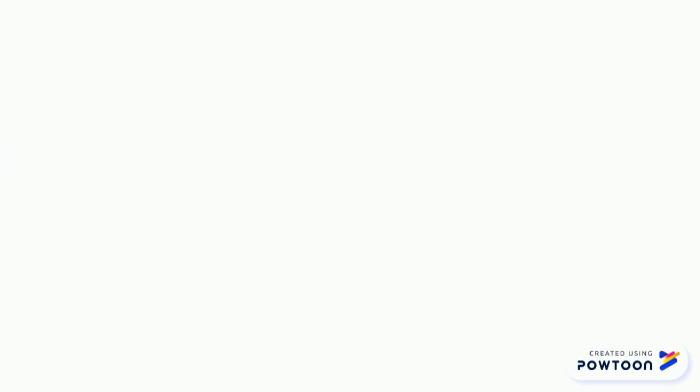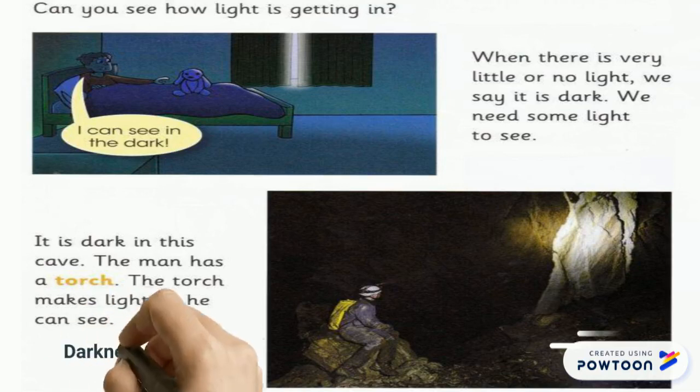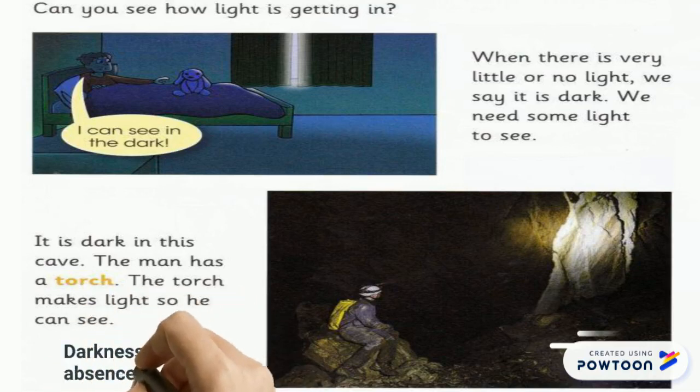Can you see how the light is getting in? When there is very little or no light, we say it's dark. We need some light to see. It is dark in this cave. The man has a torch. The torch makes the light so we can see the objects.